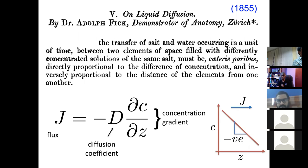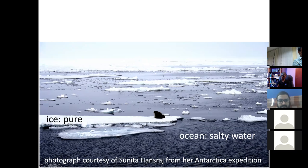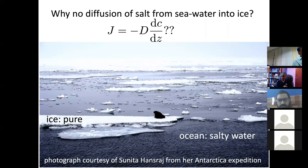This is Fick's diffusion equation, and you can immediately explain why it cannot be correct. This is a picture that my sister took in Antarctica — you can see ice floating in the ocean. The ice is almost pure water whereas the ocean contains salt, meaning there is a huge concentration gradient, but you still don't have any diffusion. No matter how long you leave it, the ice remains as pure water. So why is it not obeying Fick's law despite the large concentration gradient? It doesn't obey Fick's law, so there must be something not right about it.